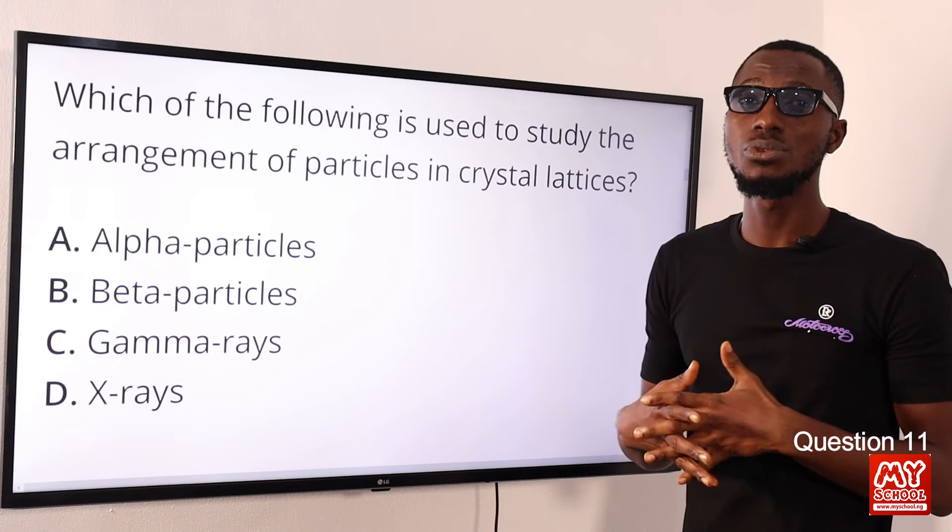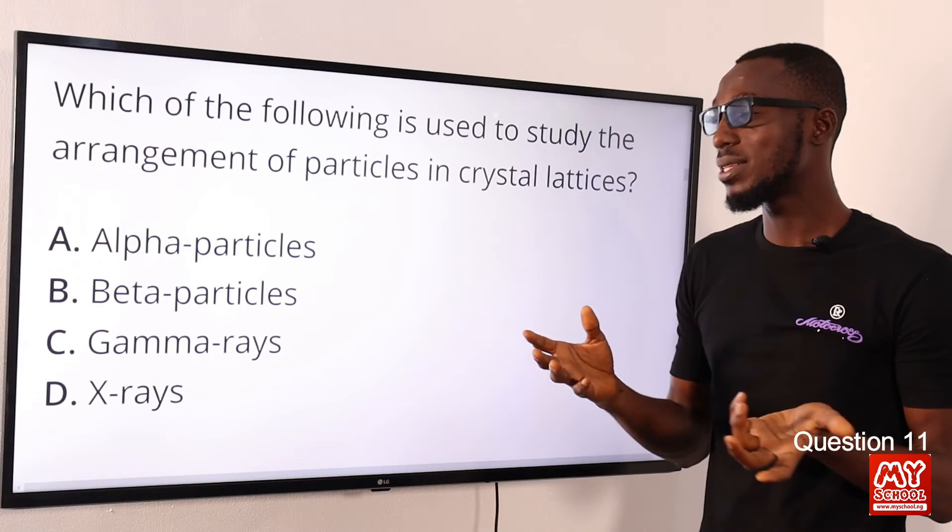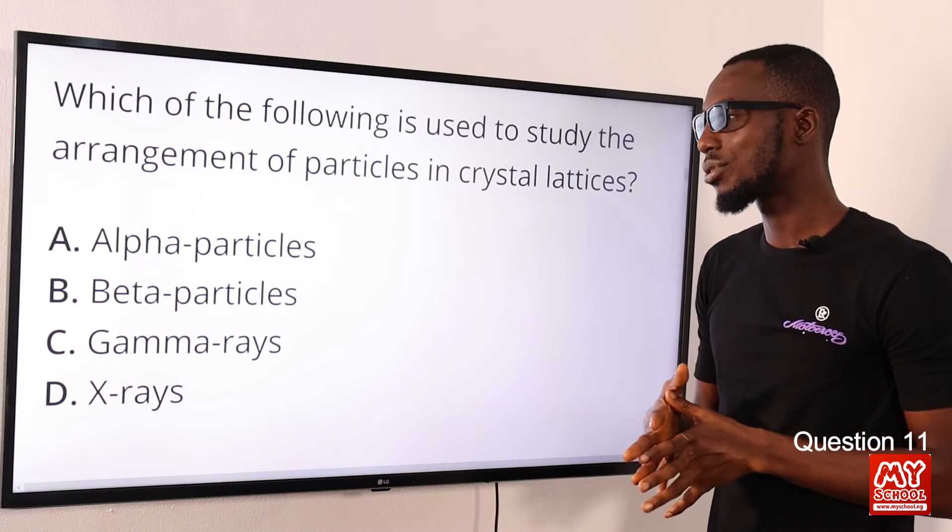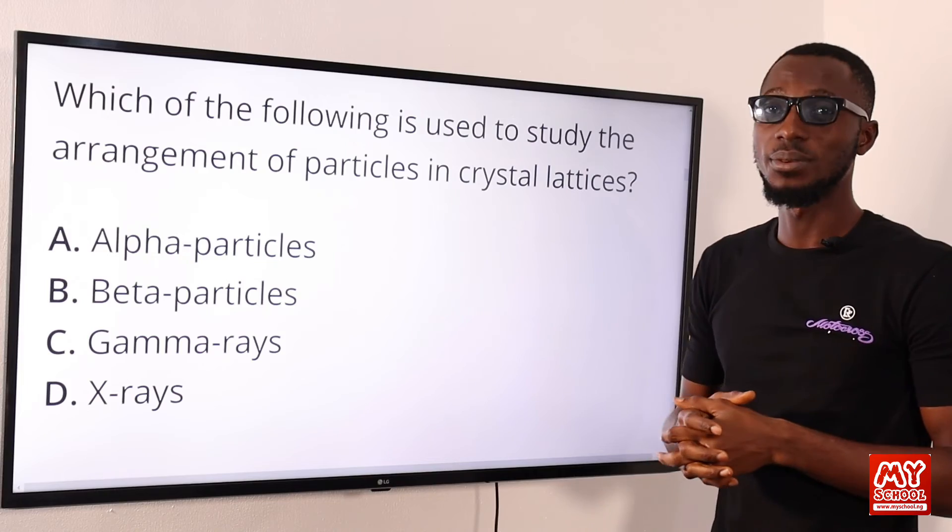Beta particles and gamma rays—you can also use them to control or monitor the thickness of sheet materials like paper, plastic, or metals during their production. So the correct option here is option D for X-rays.